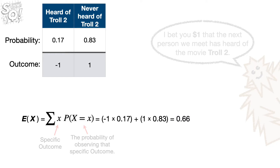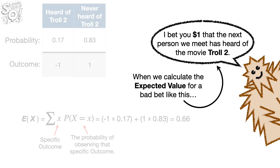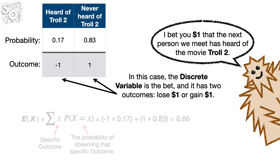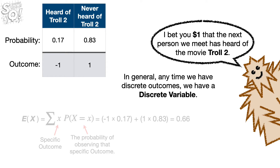Dreaded terminology alert! When we calculate the expected value for a bad bet like this, we say that we are calculating the expected value for a discrete variable. In this case, the discrete variable is the bet, and it has two outcomes: lose $1 or gain $1. In general, any time we have discrete outcomes, we have a discrete variable.